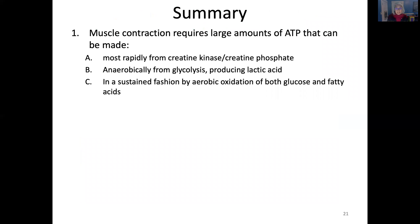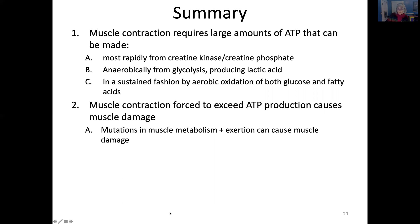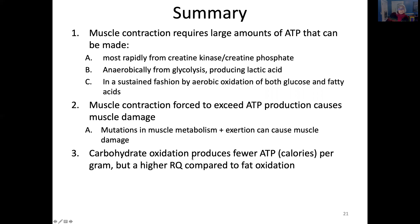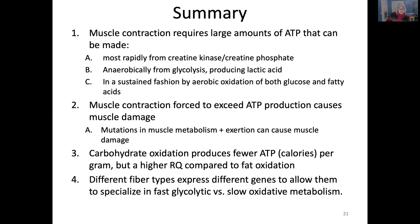Summary: muscle contraction requires large amounts of ATP that can be made most rapidly from creatine kinase and creatine phosphate, then anaerobically from glycolysis producing lactic acid, and finally in a sustained fashion by aerobic oxidation of glucose and fatty acids. Muscle contraction forced to exceed ATP production causes muscle damage, and mutations in muscle metabolism plus exertion can also cause damage. Carbohydrate oxidation produces fewer calories per gram but a higher RQ compared to fat. The different fiber types express different genes to specialize in fast glycolytic versus slow oxidative metabolism.